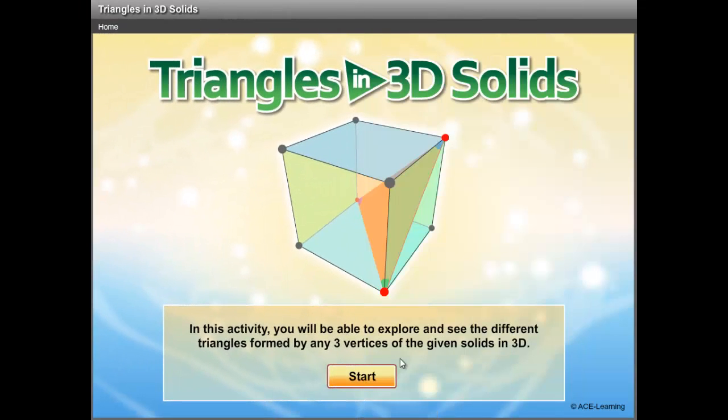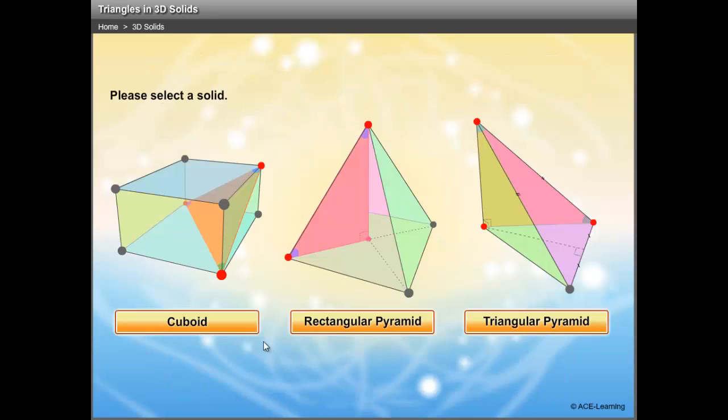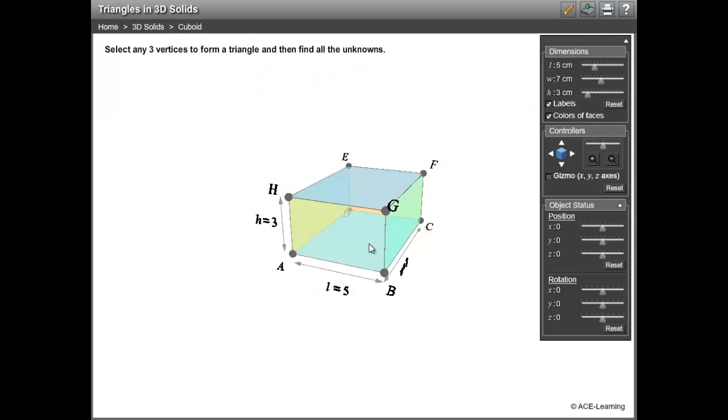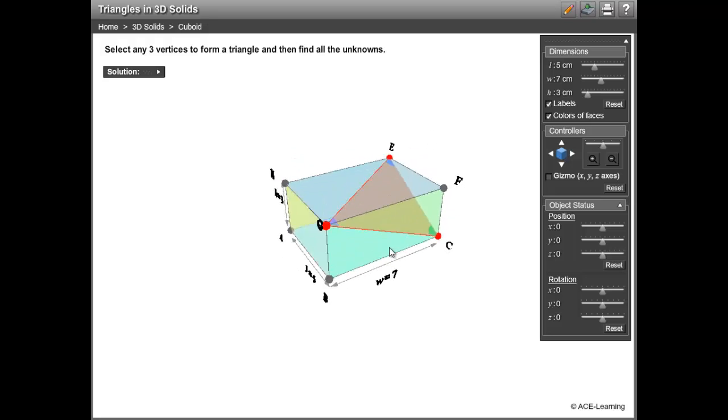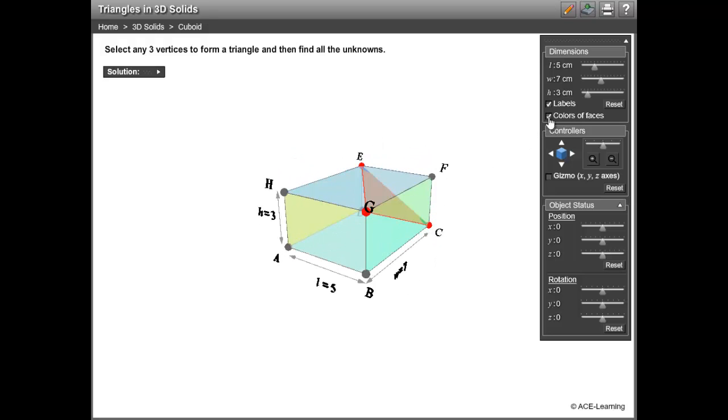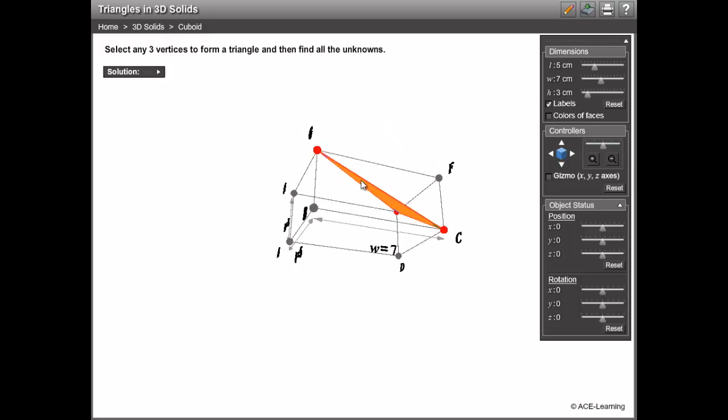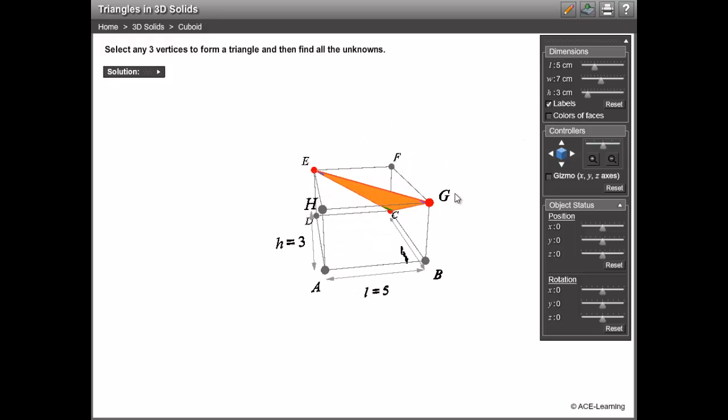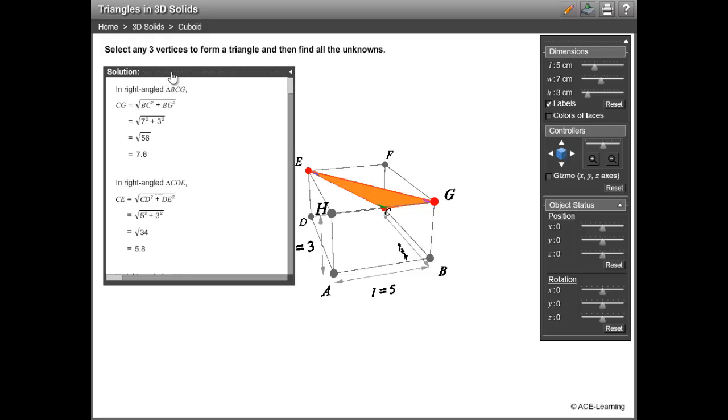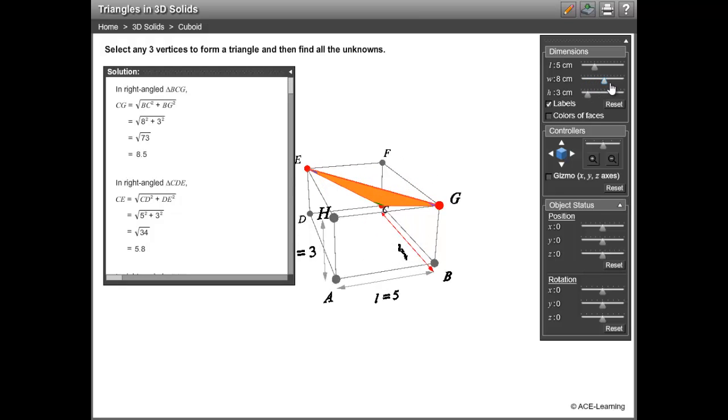Now let's take a look at the 3D tool for triangles in 3D solids. To begin, select a solid. Now let's have the triangle in the solid. If you want the reference triangle to stand out, no problem. Solutions are also provided. Notice how the values in the solution changes when the object is modified?